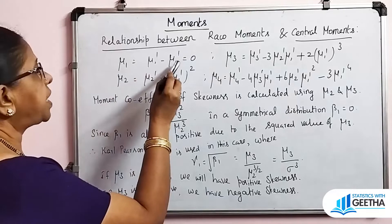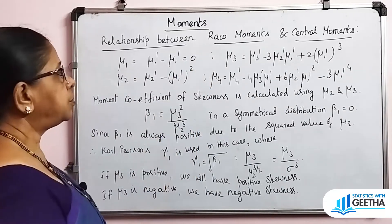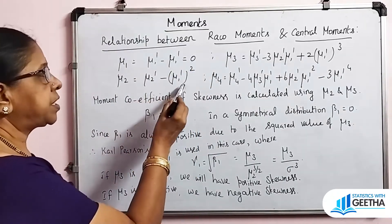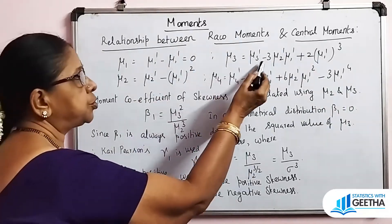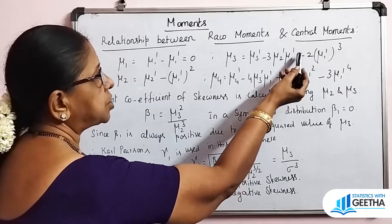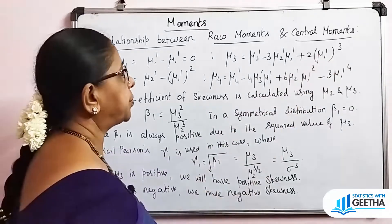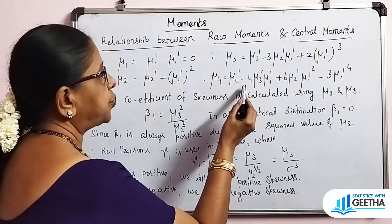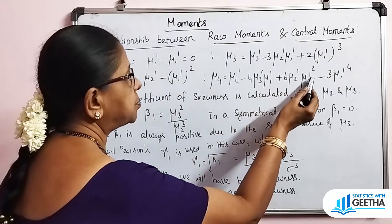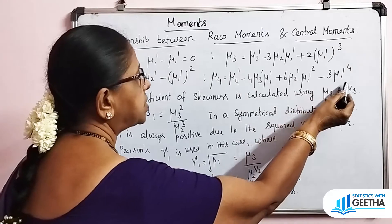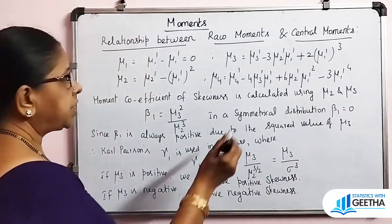The relationship formulas are: mu1 = mu1' − mu1' = 0. mu2 = mu2' − (mu1')². mu3 = mu3' − 3·mu2'·mu1' + 2·(mu1')³. mu4 = mu4' − 4·mu3'·mu1' + 6·mu2'·(mu1')² − 3·(mu1')⁴.